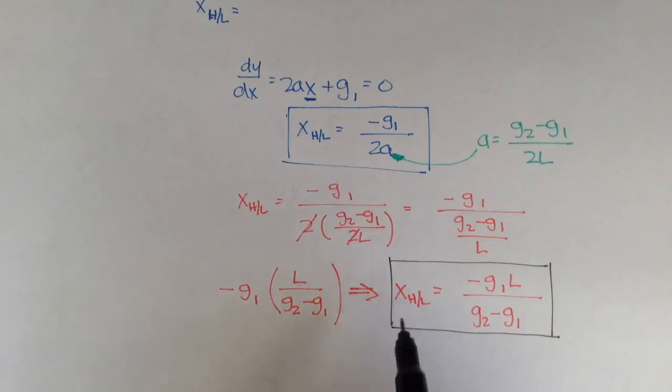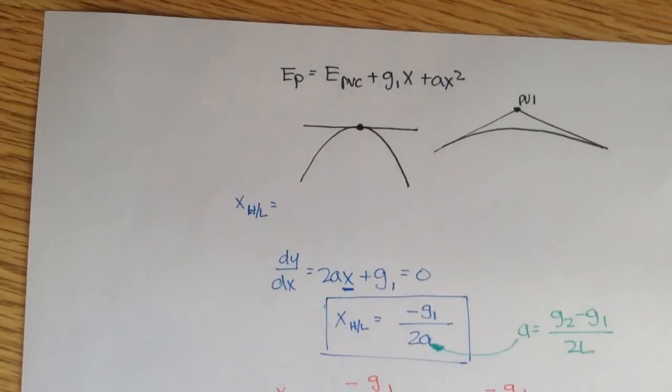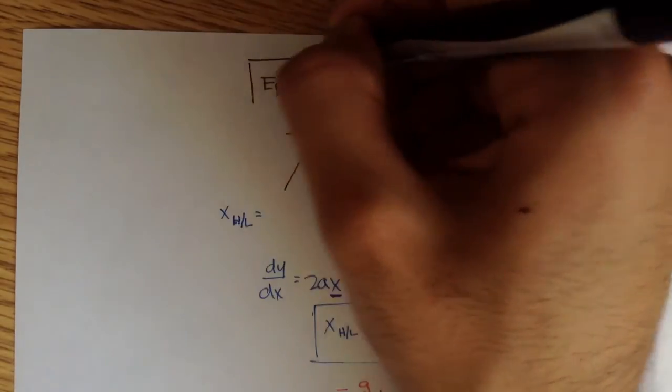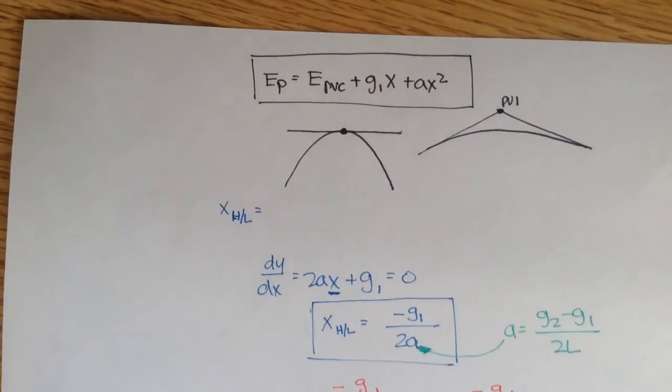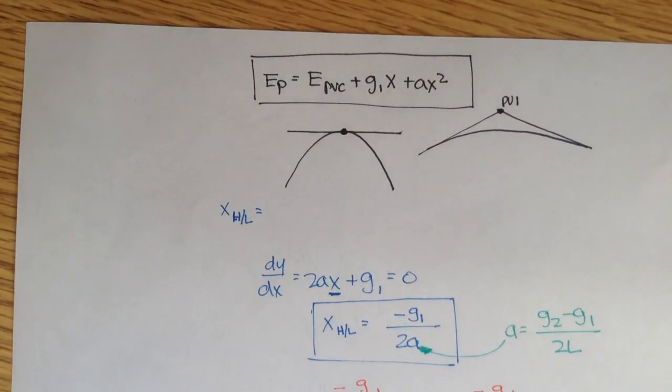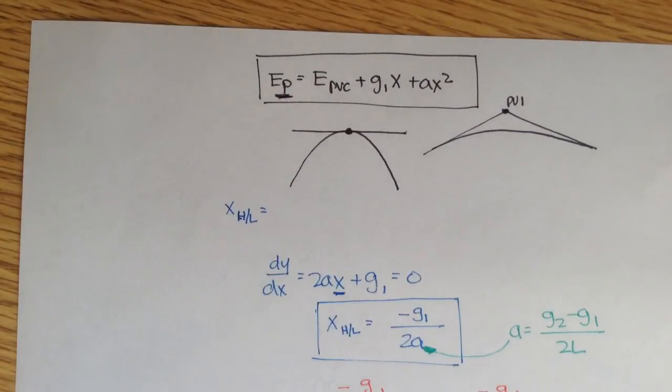And so basically, once we have x, which will give us the highest or lowest point, we plug it into this equation, and that gives us the elevation of that highest or lowest point for a crest or sag curve. So we'll take what we know about highest and lowest points, and we'll use this equation, and in the next several videos, we'll do vertical curve problems, and hopefully all this will make a lot more sense once we start doing examples. Alright, so see you then.